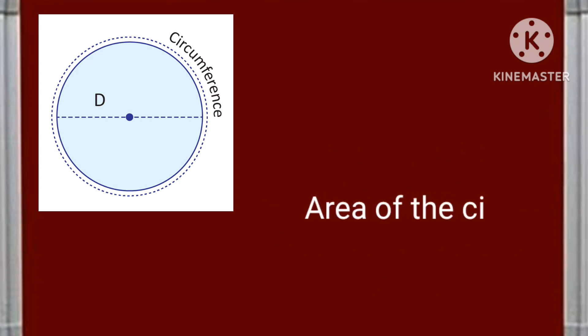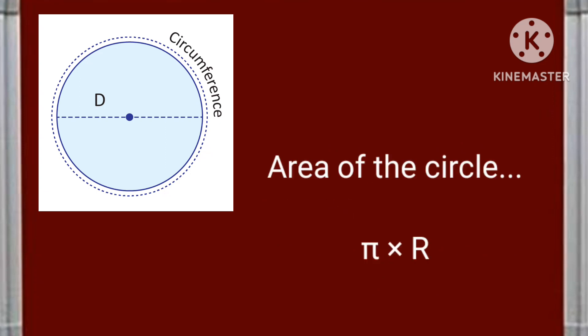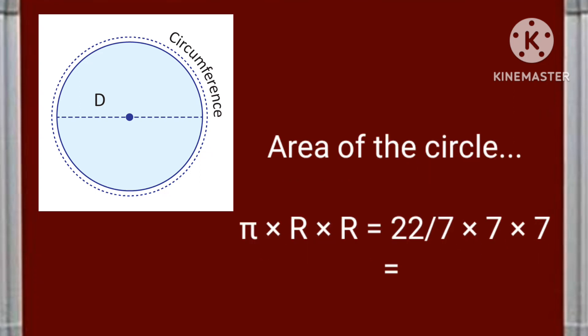Now the area of the circle will be pi r square that is 22 by 7 into 7 square the value will be 154 square centimeter.